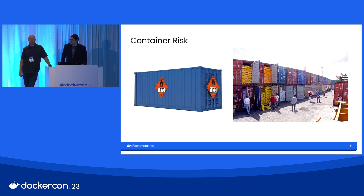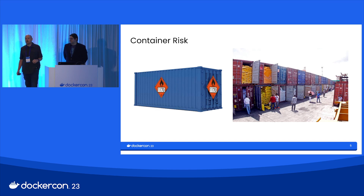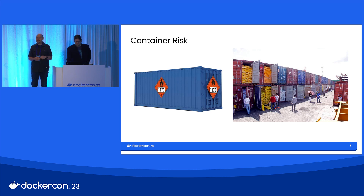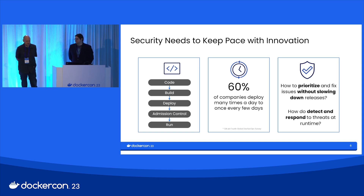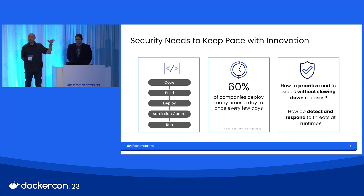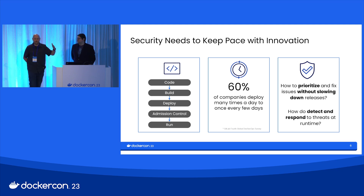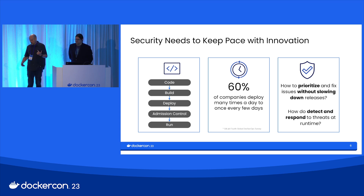You might have security issues for a number of reasons — one is based on what's inside your container, things you've done that are not the right thing when building containers. Other times it's more about the surrounding environment, things that give access that probably shouldn't be there. There's a lot happening in the industry — containers, Kubernetes, cloud — that we need to keep pace with from coding all the way through runtime. 60% of companies report deploying either many times a day or every few days, compared to the old model of every four to six months or a big release once a year. So how do you prioritize things without slowing yourself down? How do we detect and respond to issues?